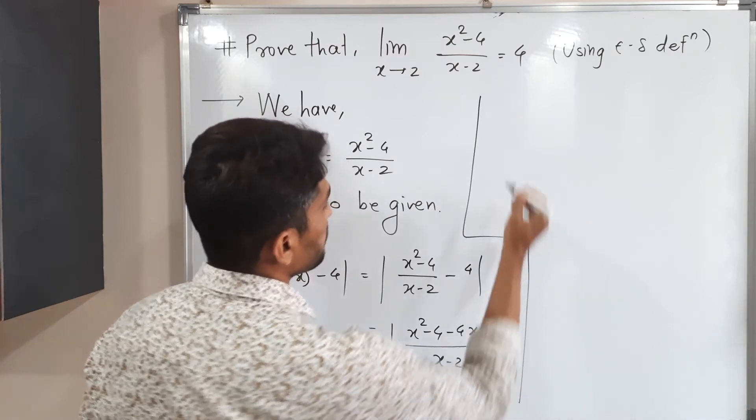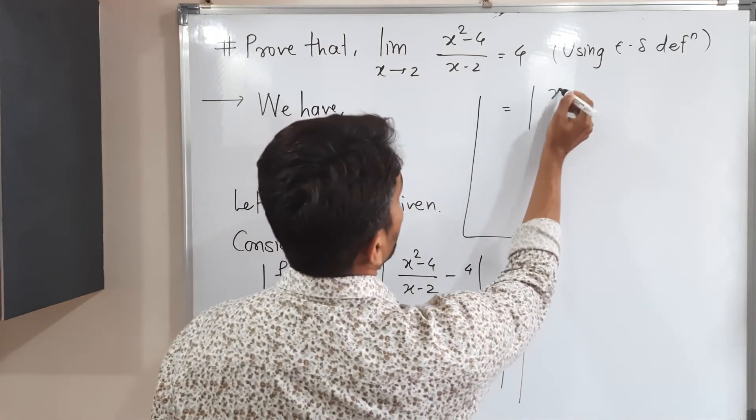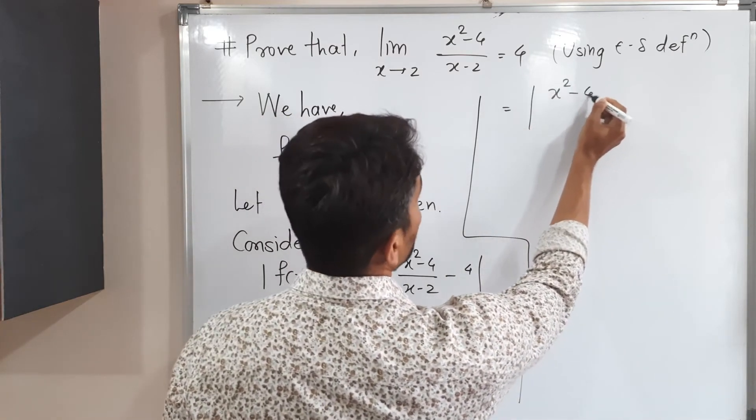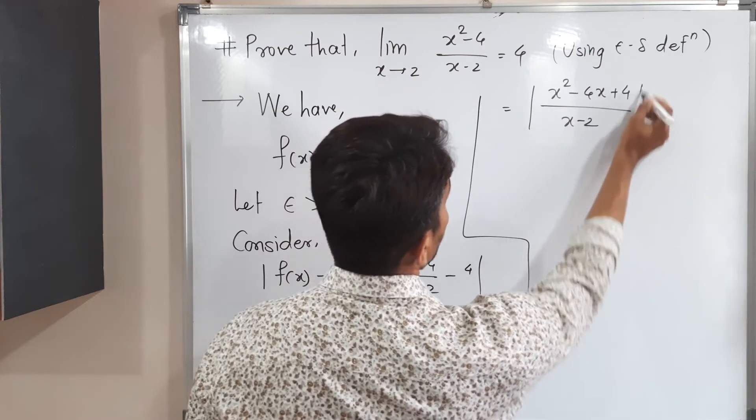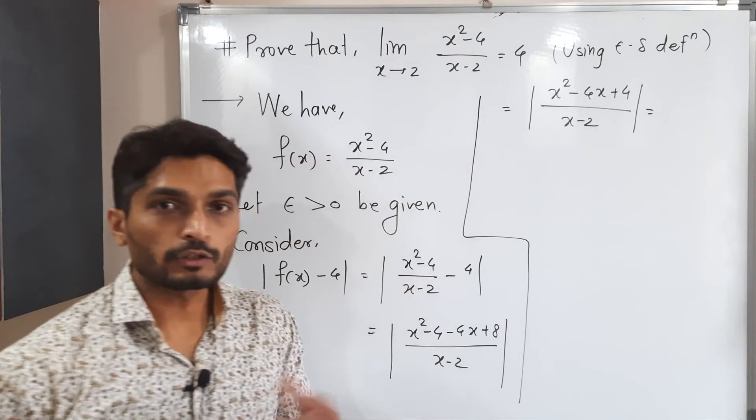8 plus 8 minus 4 getting. So we will have 4 only plus 4. Let me write that thing here. So this is equal to mod x square minus 4x plus 4 upon x minus 2. This is equal to. Can you tell me the next step?